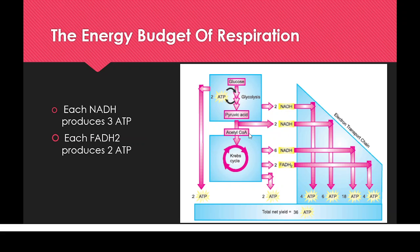The acetyl-CoA enters the Krebs cycle. As a byproduct, the Krebs cycle produces 6 NADH, which again enter the electron transport chain. Since 1 NADH produces 3 ATPs, 6 NADH give a total of 18 ATPs. Additionally, 2 FADH2 are produced; since 1 FADH2 produces 2 ATPs, 2 FADH2 produces 4 ATPs.